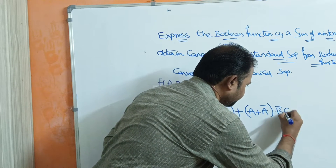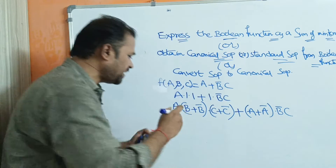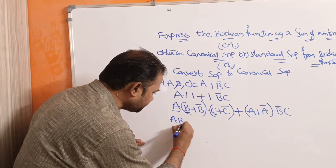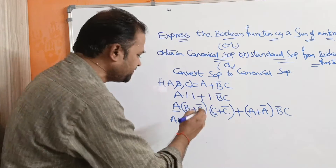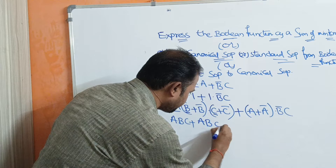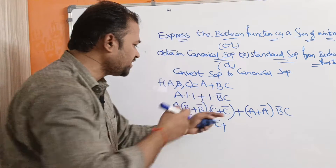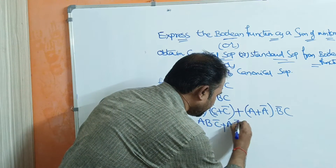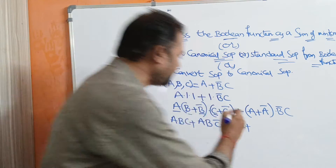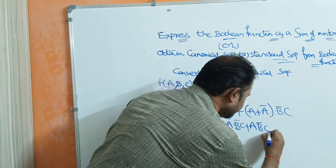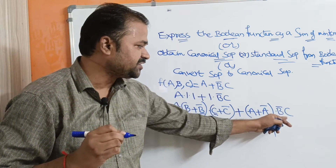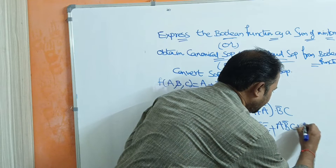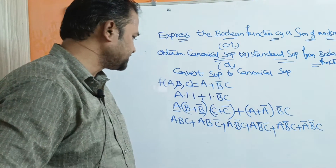Now let us perform the multiplication operation. Multiply a with b and c to get abc. Next, multiply a with b and c-bar to get abc-bar. Next, multiply b-bar with c and a to get ab-bar c, and with a and c-bar to get ab-bar c-bar. Then from the second term, a into b-bar c gives ab-bar c, and a-bar into b-bar c gives a-bar b-bar c.